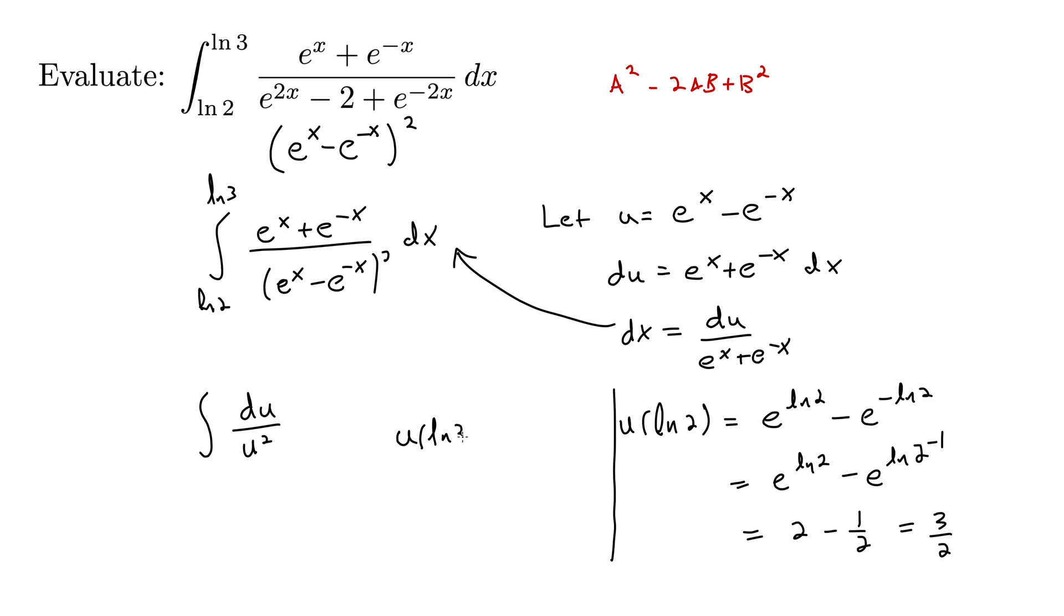Sorry, u of natural log of 3 is e to the natural log of 3 minus e to the minus natural log of 3. Well, for the same reasoning gives us 3 minus 1 third.